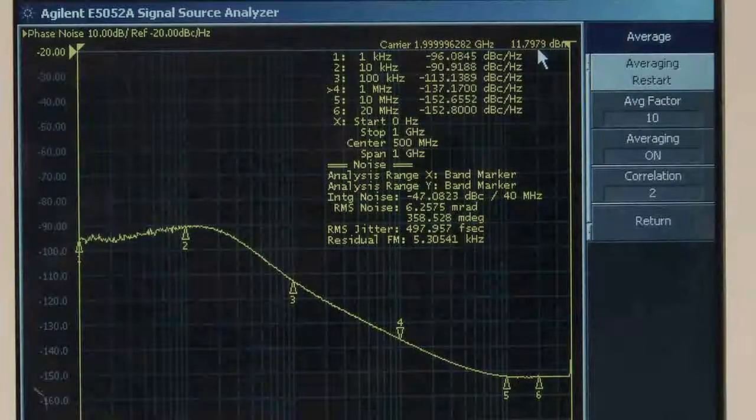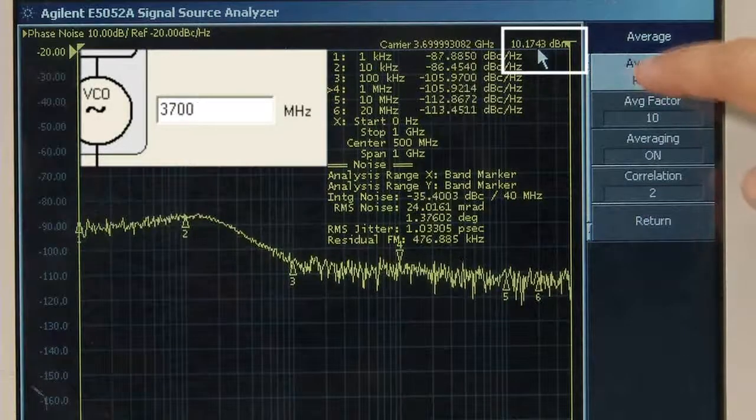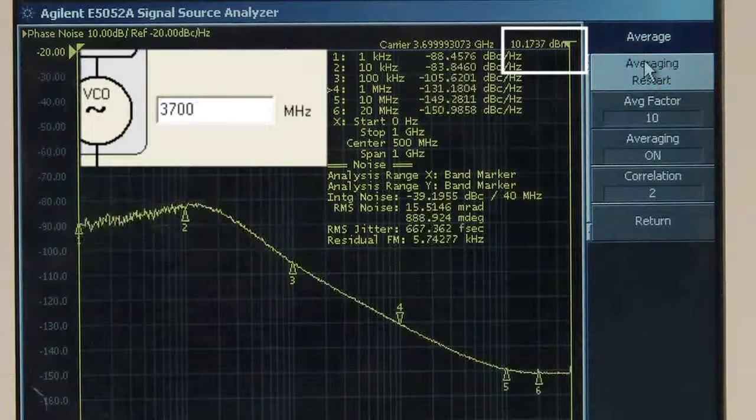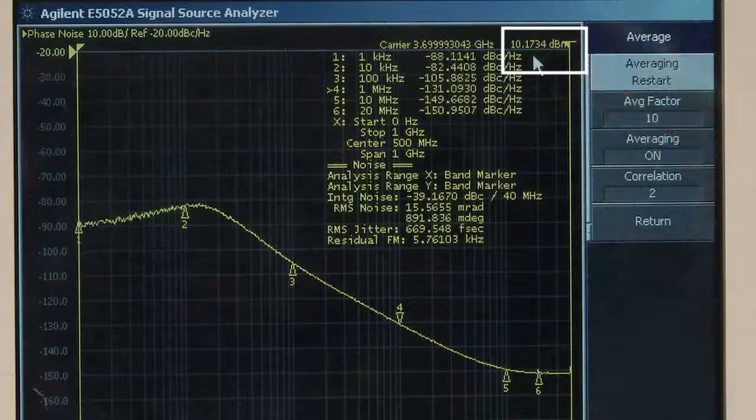Also, even if I go to, say, 3.7 GHz, we're still doing better than plus 10 dBm right there.